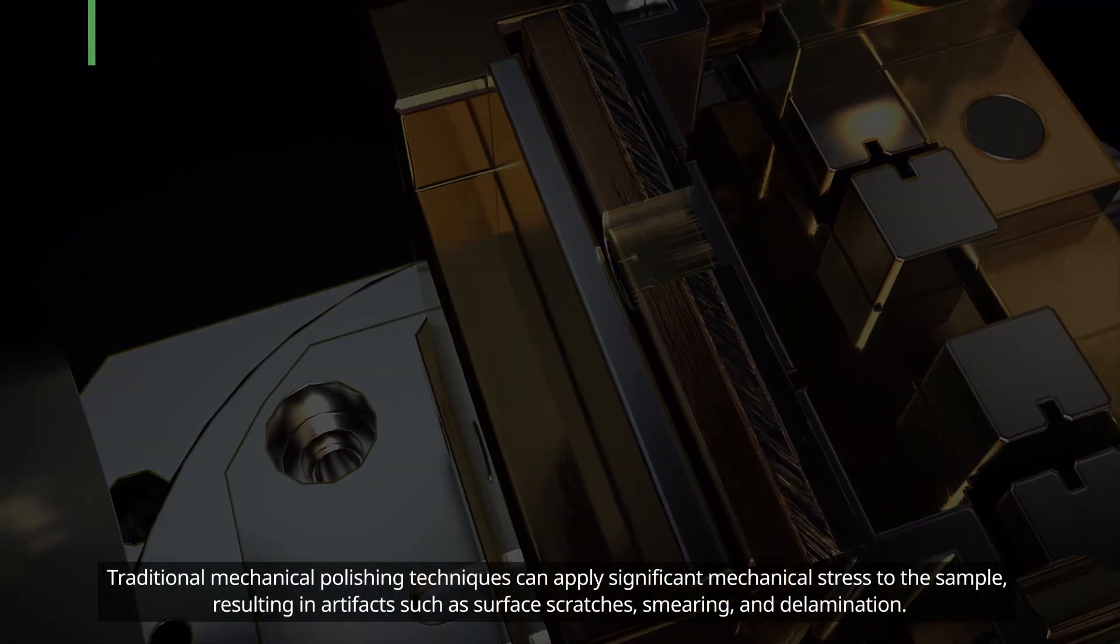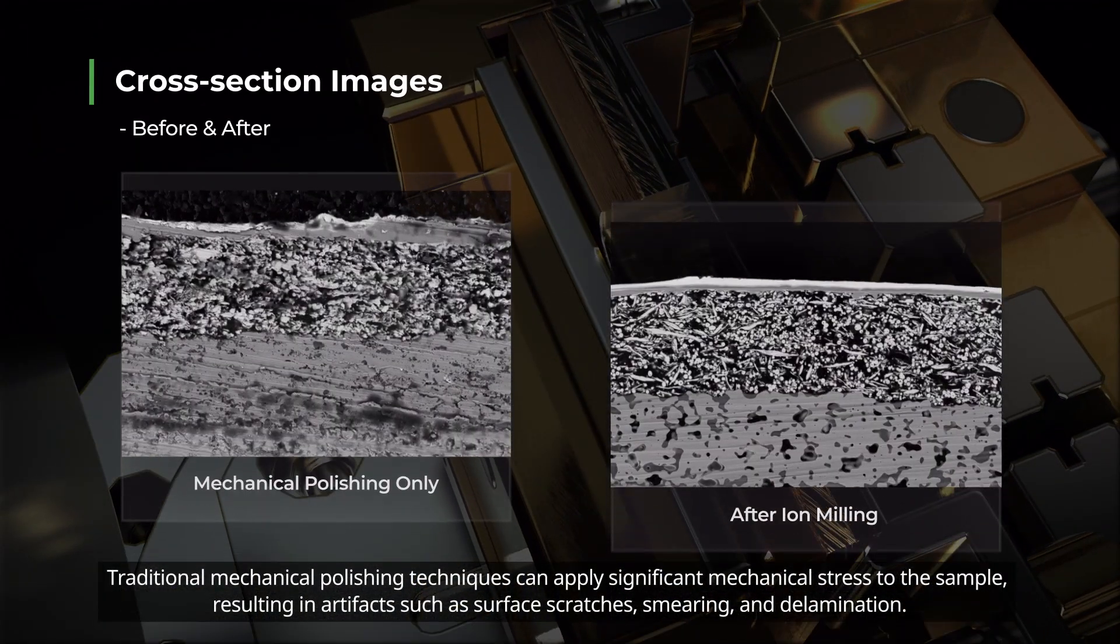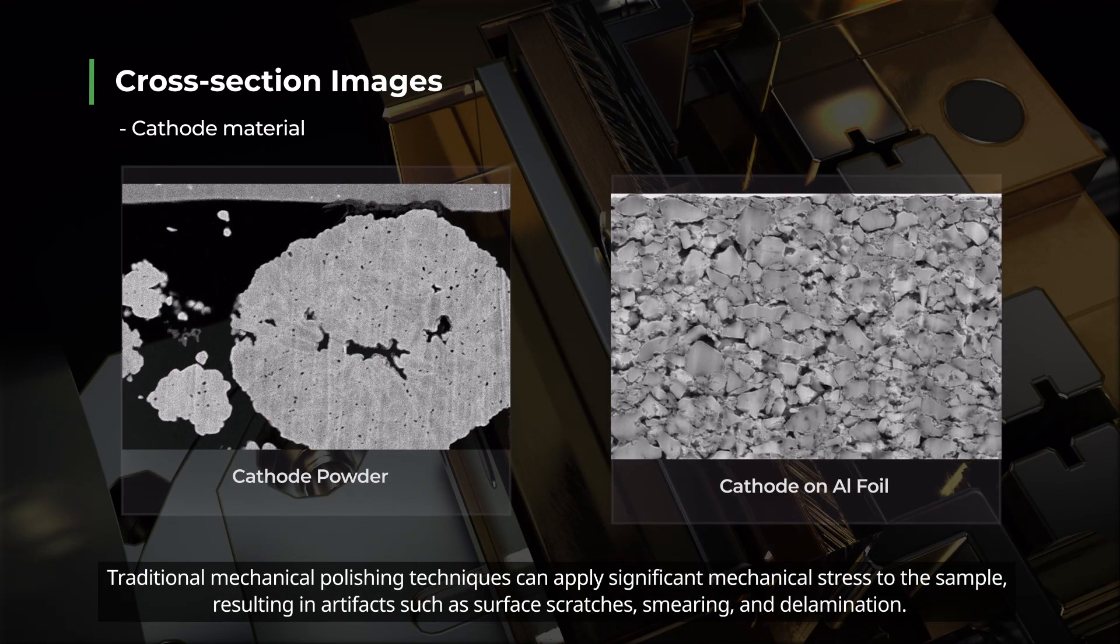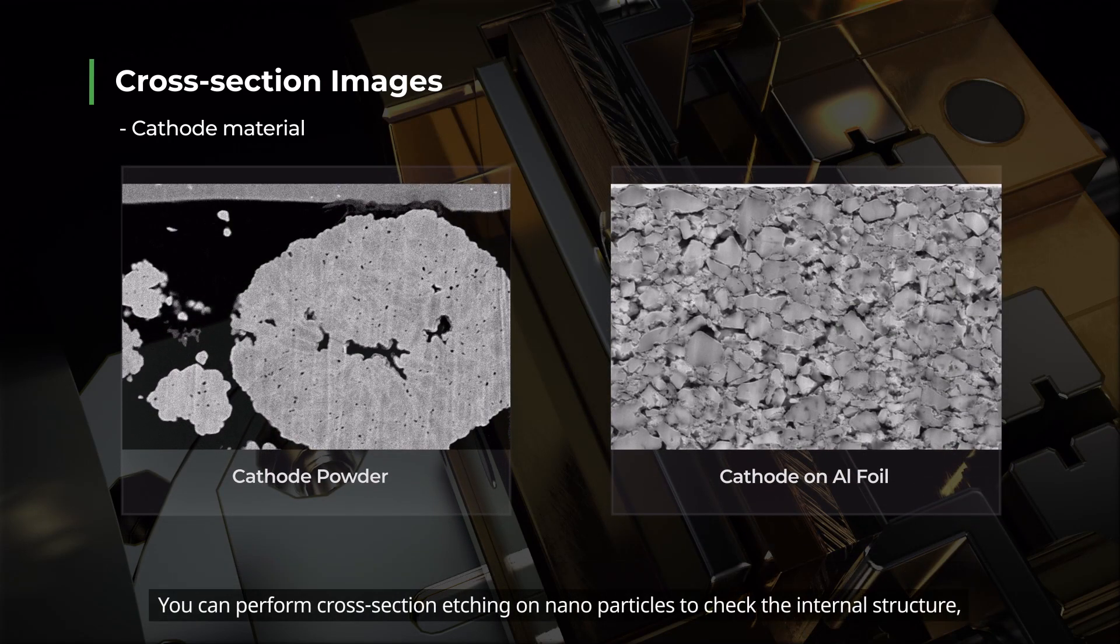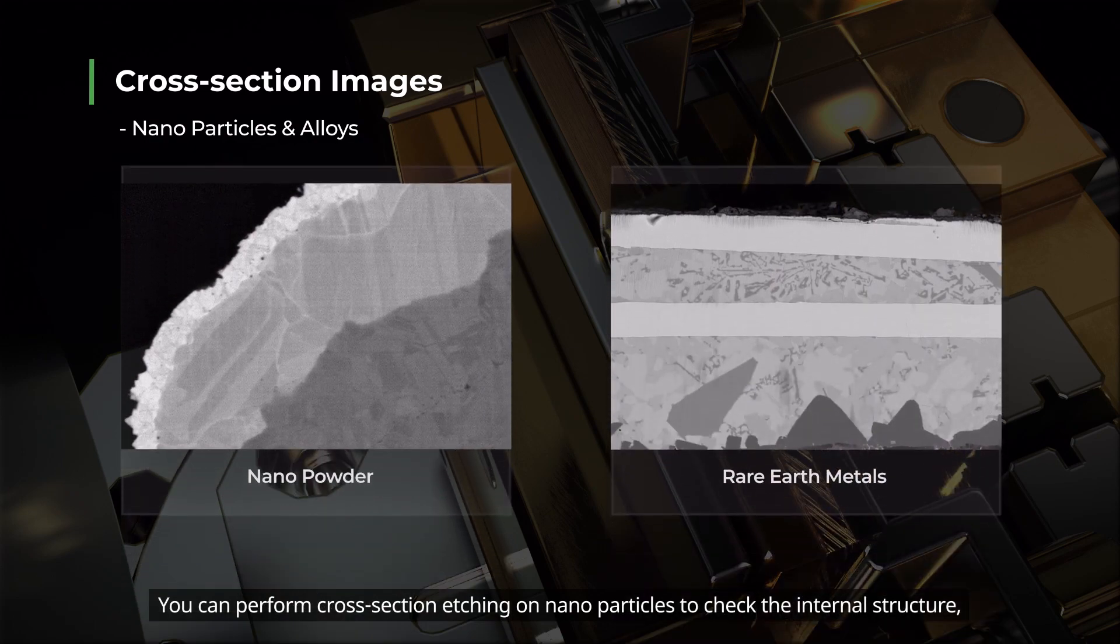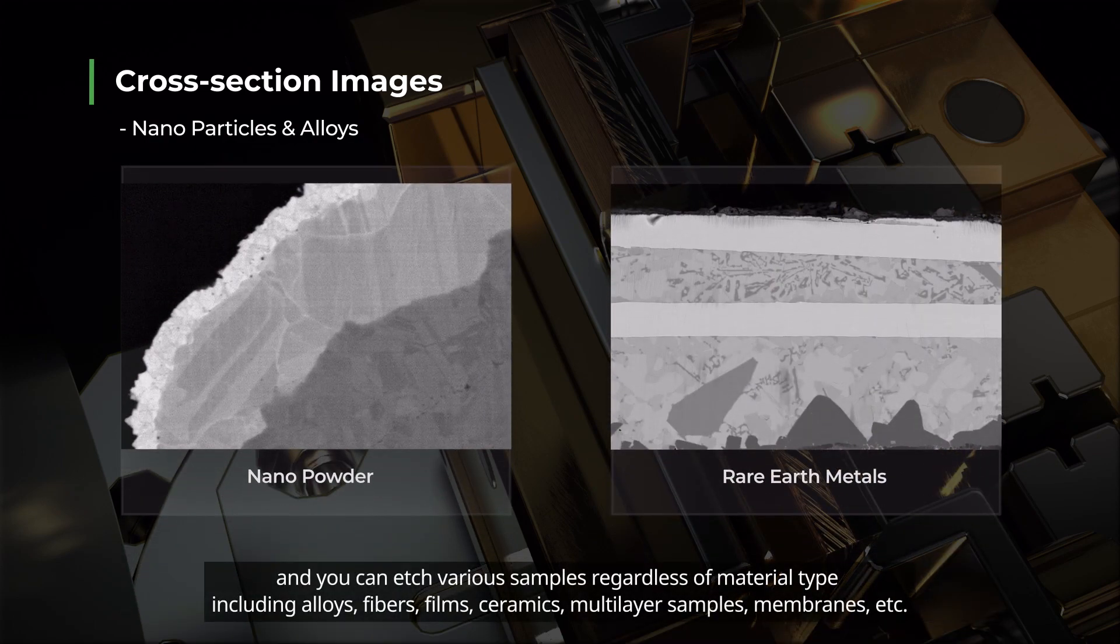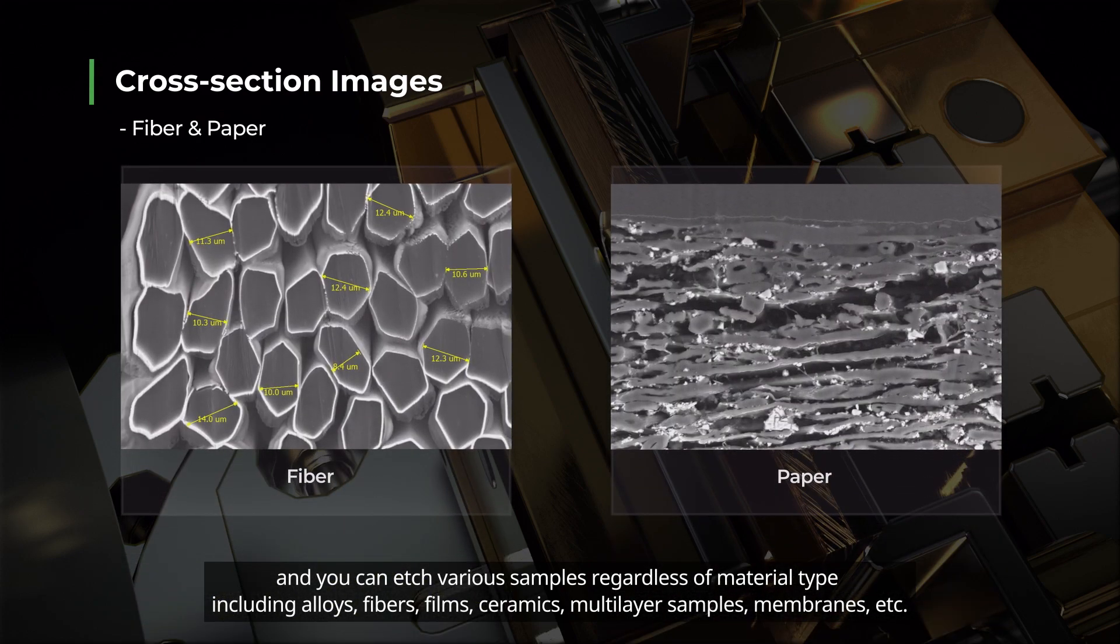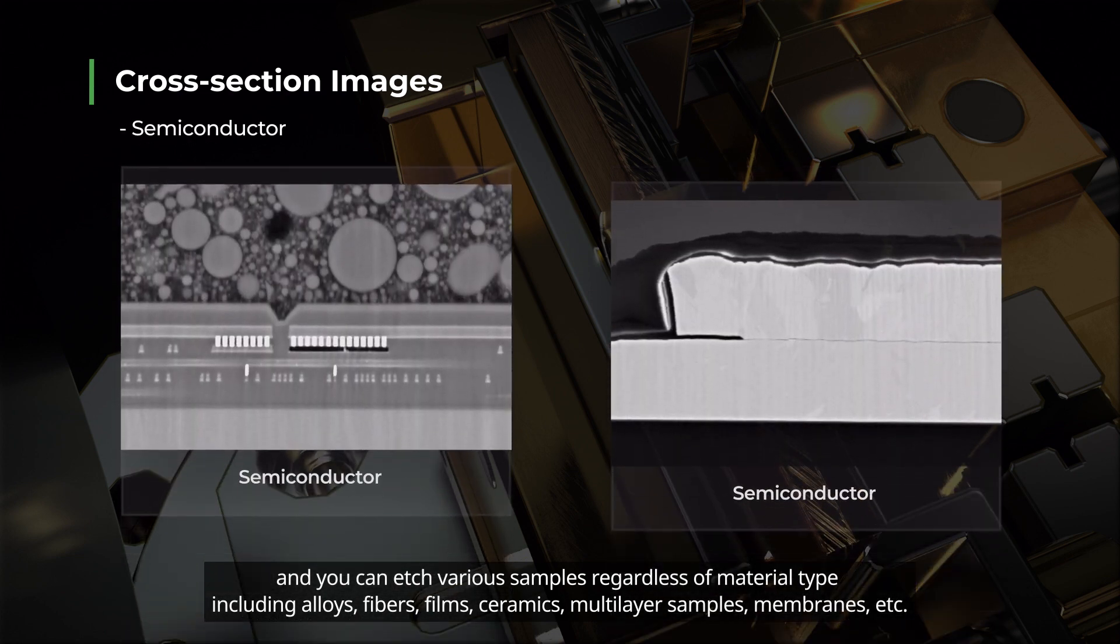Traditional mechanical polishing techniques can apply significant mechanical stress to the sample, resulting in artifacts such as surface scratches, smearing, and delamination. You can perform cross-section etching on nanoparticles to check the internal structure. And you can etch various samples regardless of material type, including alloys, fibers, films, ceramics, and multi-layer samples.